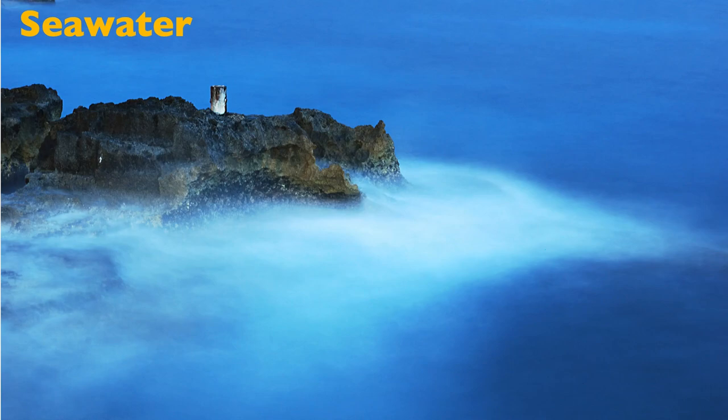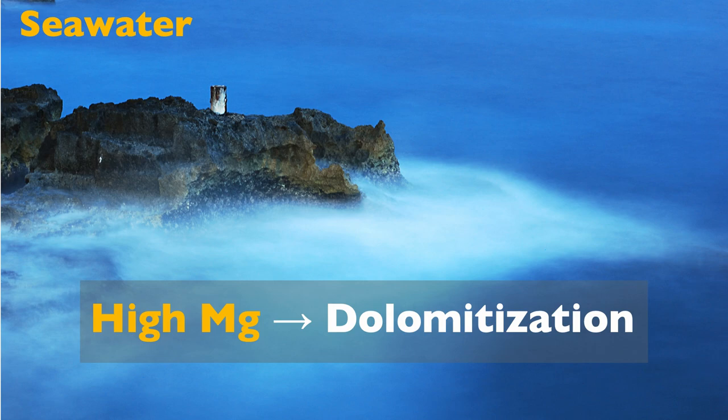So dolomite and dolomitization is a very important topic in carbonate reservoirs. Let's review what types of fluid you would need to transform a limestone into a dolomite. Seawater is potentially a fluid that can dolomitize because there is a high concentration of magnesium in seawater. Provided that you have a diagenetic pump to move large volumes of fluid through your system, you can bring a lot of the seawater magnesium into contact with the limestone.